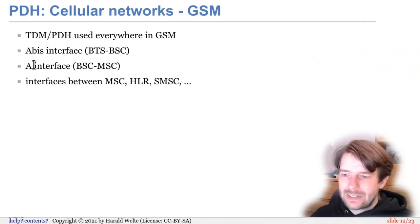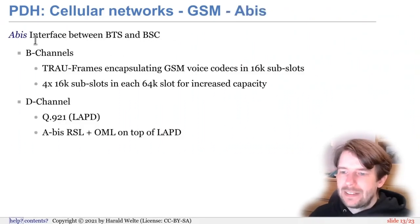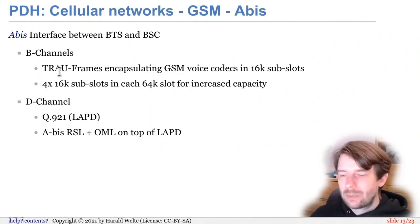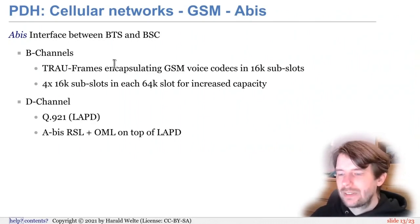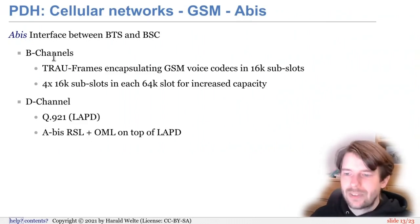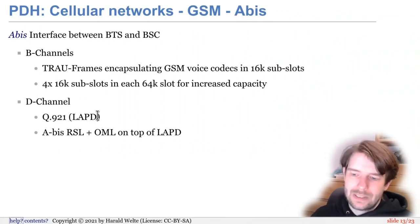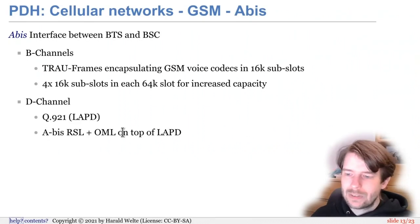On the A-bis interface, the A interface, and other interfaces in the core network — virtually every interface in the entire GSM network was specified this way. The A-bis interface differs from an ISDN user interface: we still have 30 B channels, but inside each B channel, instead of a single 64-kilobit voice call with PCM-A or PCM-U encoding, we split it into four 16-kilobit subslots. So we can have four GSM voice codec calls within one B channel, meaning 120 concurrent voice calls on one E1 line. On the D channel, we have Q.921 LapD as in ISDN, but the higher-layer protocols are A-bis RSL and OML on top of LapD.